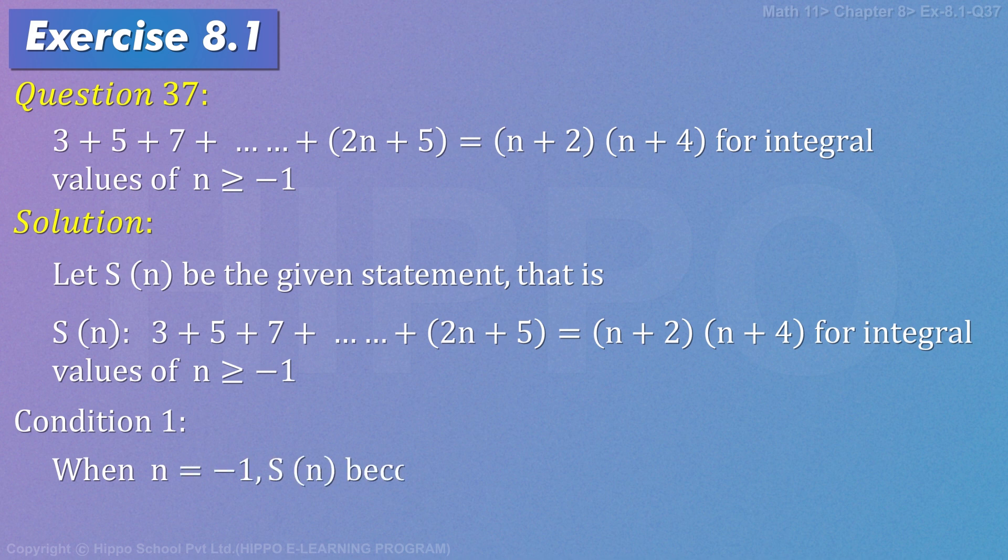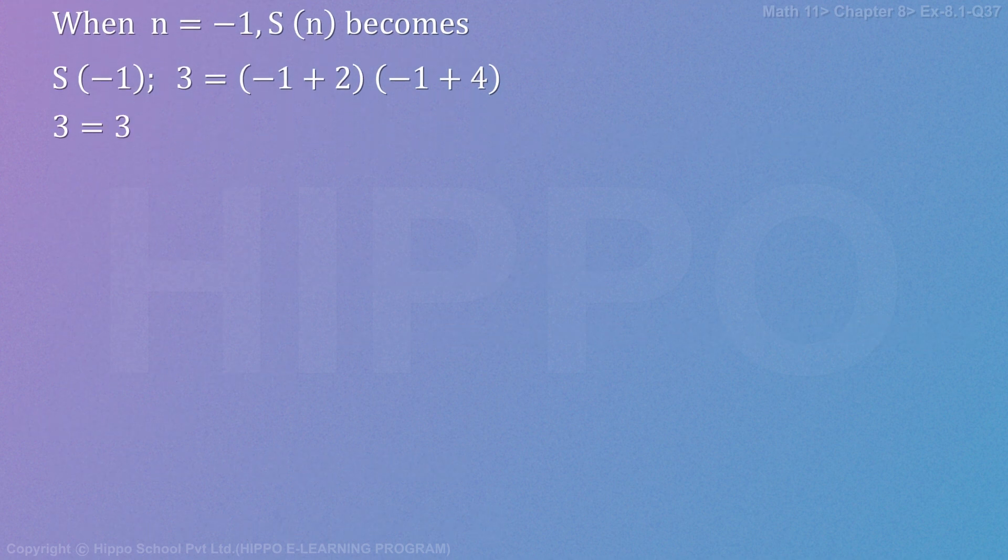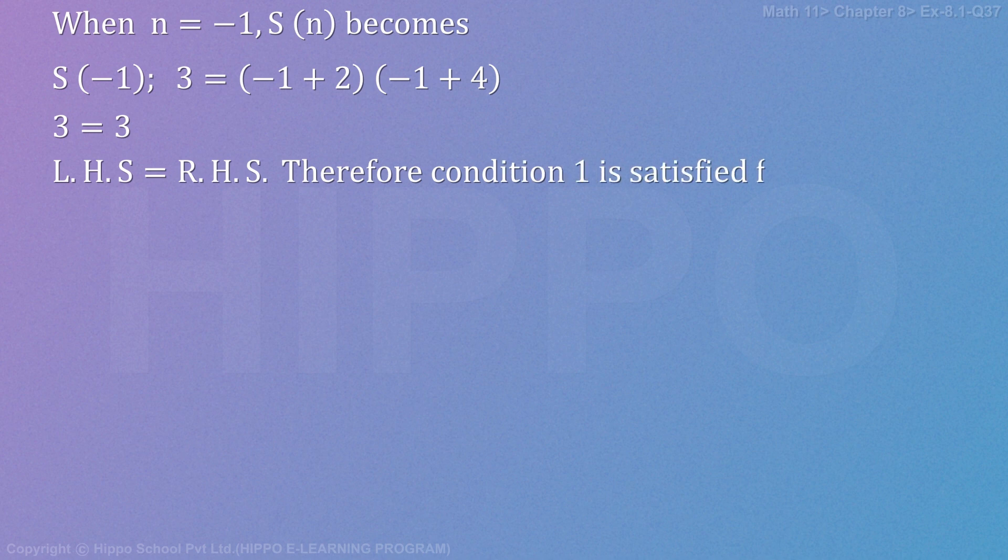When n equals to minus 1, S of n becomes S of minus 1 such that left side 2 times minus 1 plus 5 equals to minus 1 plus 2 times minus 1 plus 4, which gives 3 equals to 3. This implies left hand side equals to right hand side.